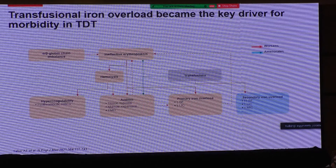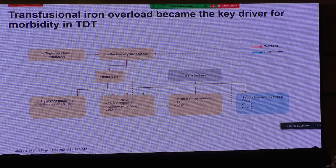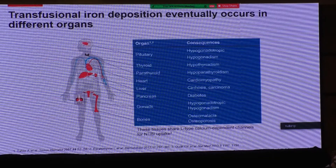Starting from gene therapy, to luspatrocept and metapivit for ineffective erythropoiesis, to other novel therapies affecting hemoglobin modulation — each step in the pathophysiology is a target for novel therapy. When you transfuse patients, you ameliorate or remove ineffective erythropoiesis, and you will not see all the complications associated with it. However, because of blood transfusion, patients will get iron overload — mostly in the liver, heart, and endocrine organs.